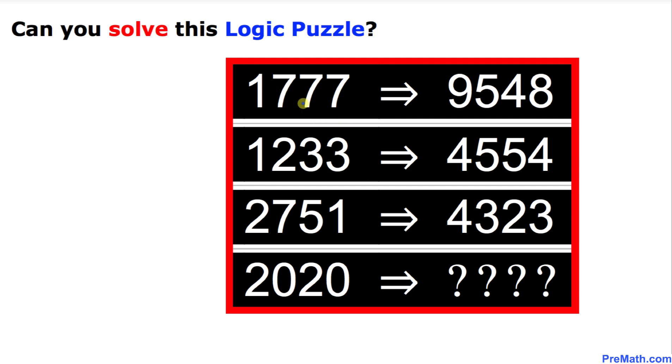1777 gives us 9548. 1233 gives us 4554. 2751 gives us 4323. Now the question is, what is 2020 going to give us at this spot?